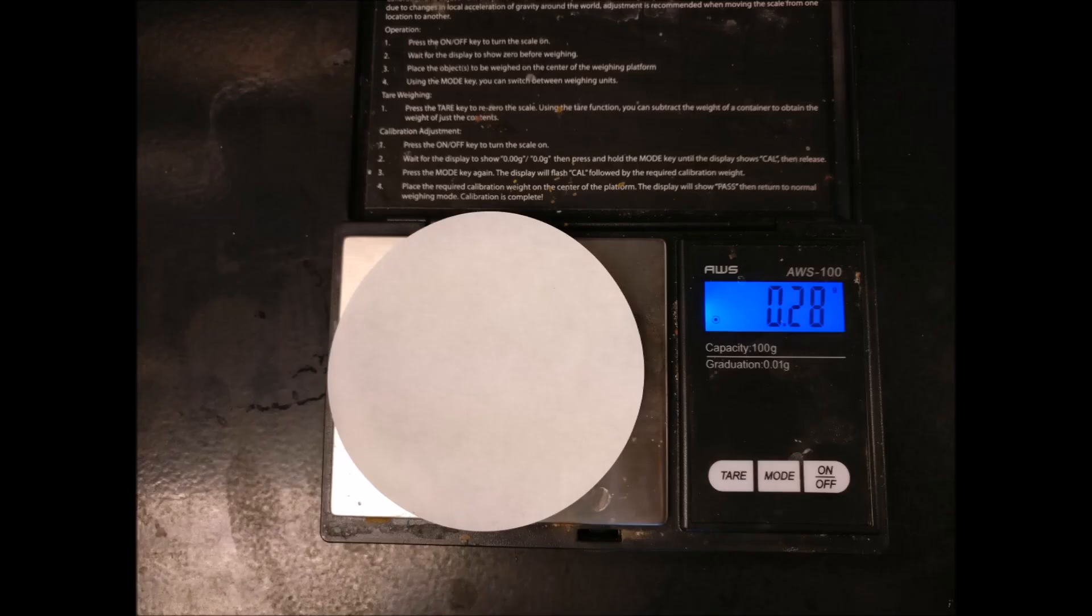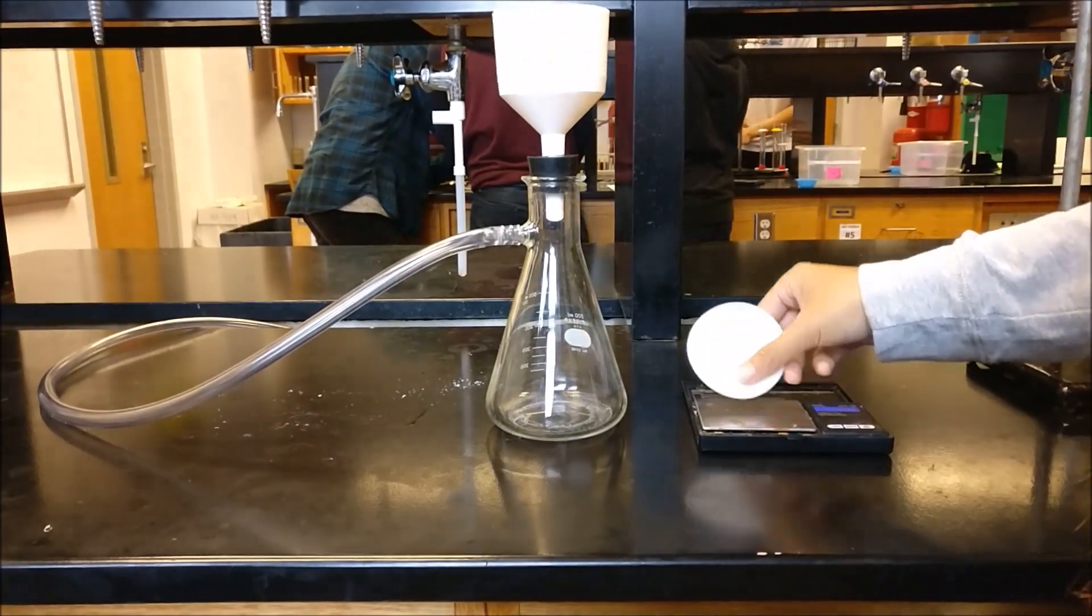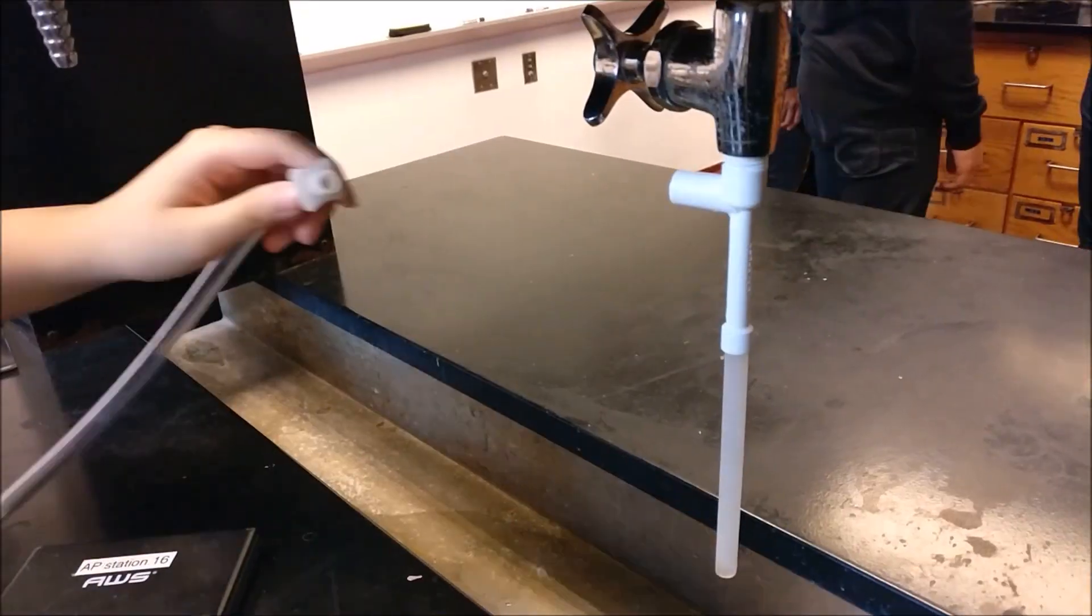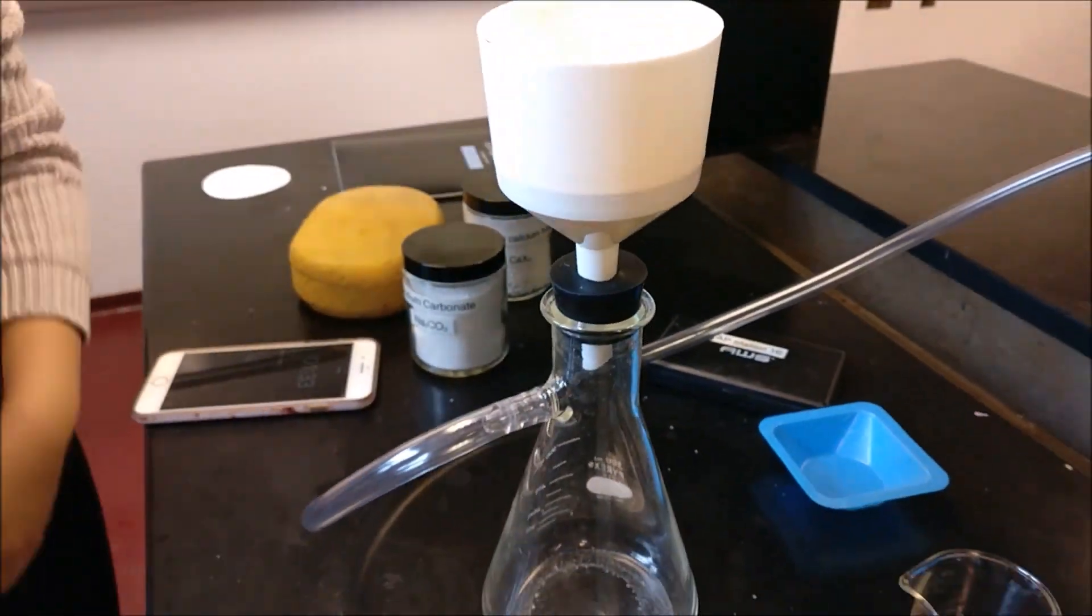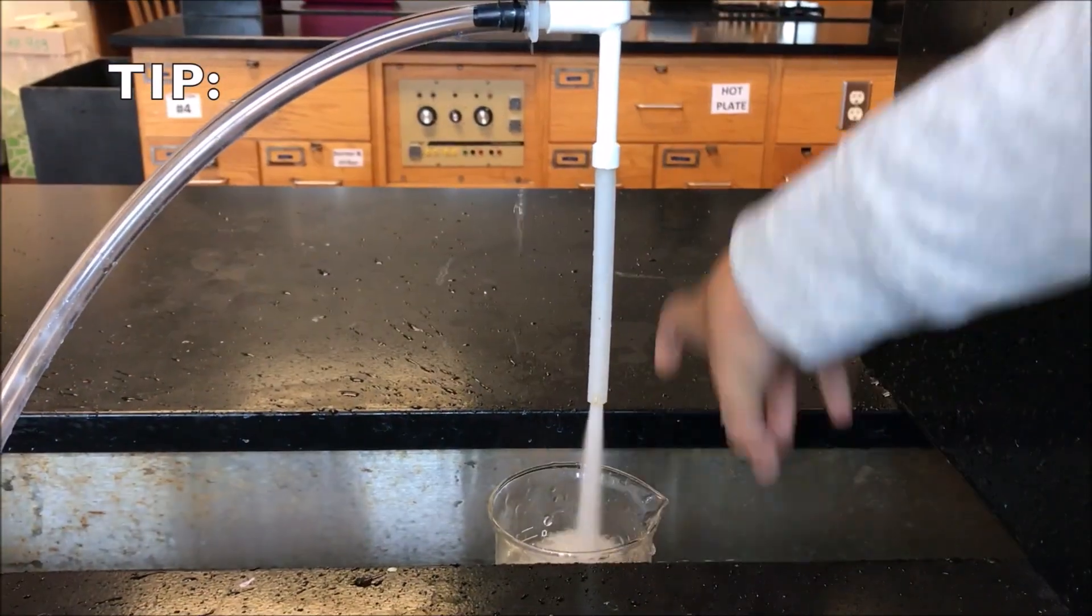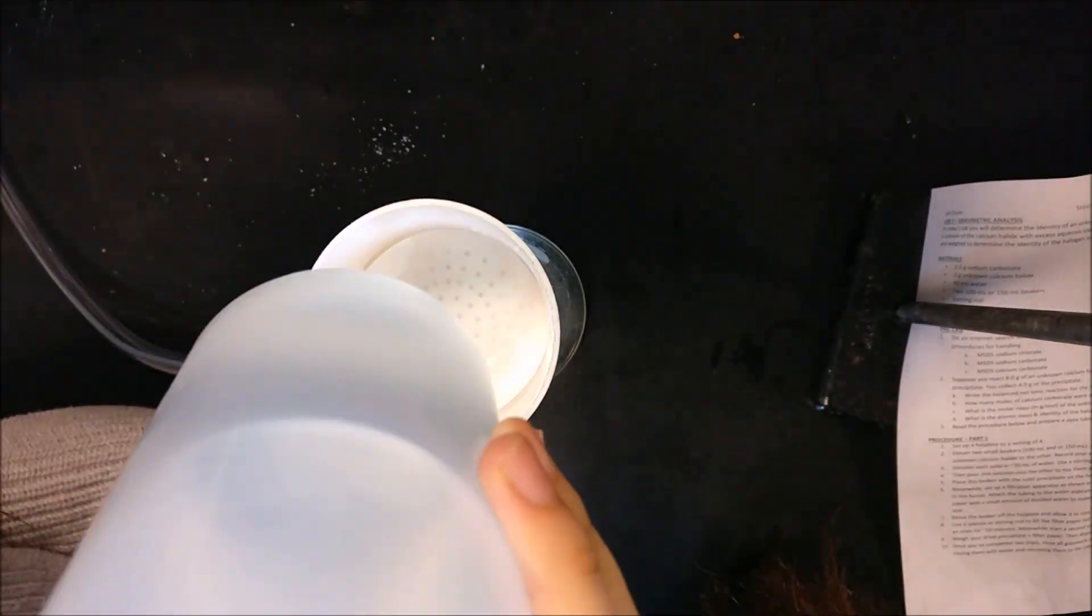To set up the filtration apparatus, weigh a piece of filter paper. Put the filter paper into the funnel and attach it to your Erlenmeyer flask. Attach the tube to the water aspirator. Put a beaker under the water to avoid splashing. Wet the filter paper.